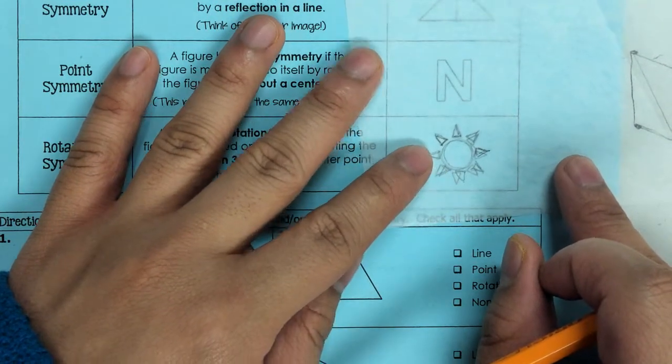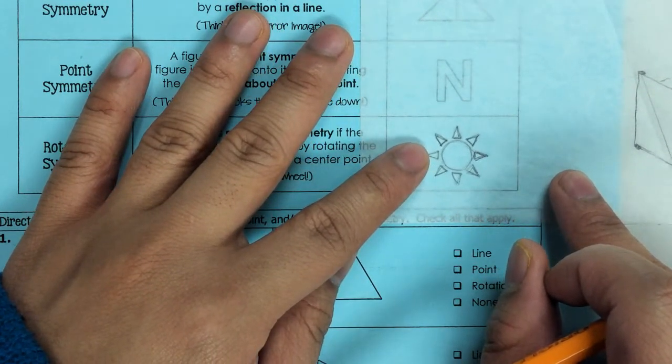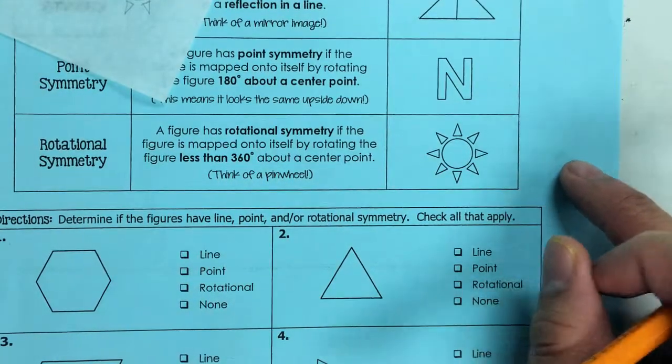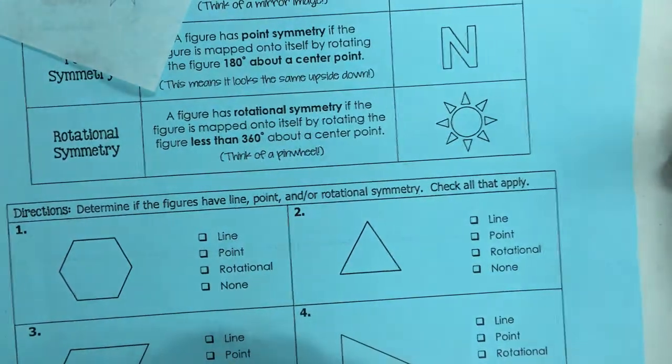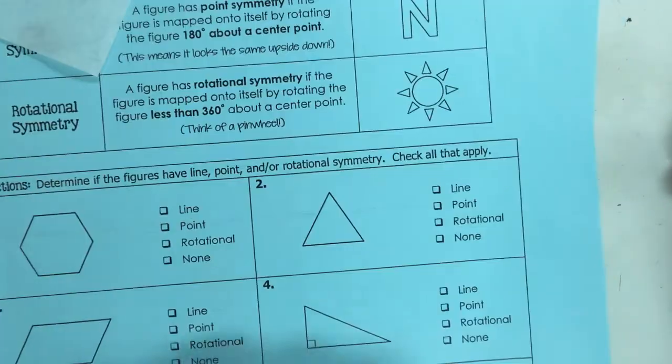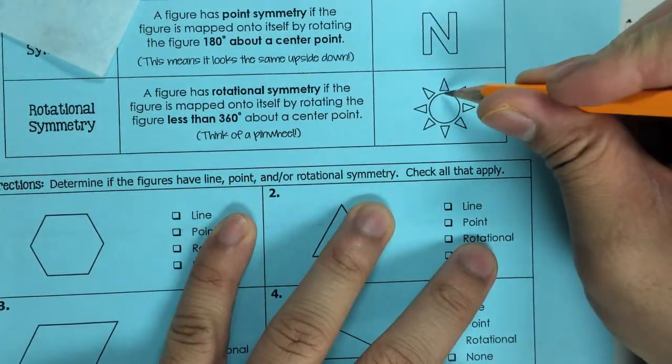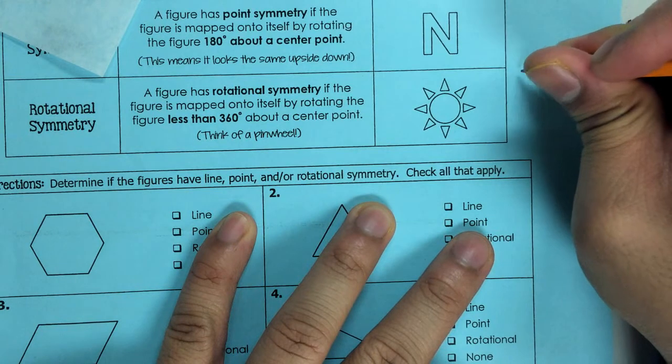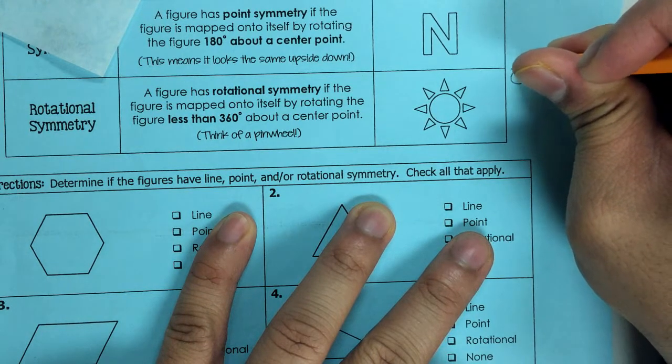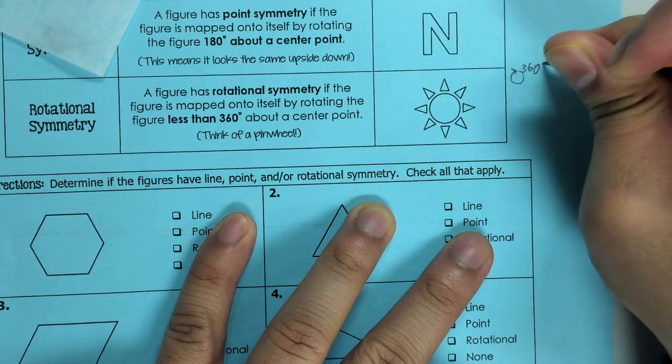Now for rotational symmetry we can figure out how many degrees we rotate. A full circle going all the way around is 360 degrees, so what we can do is take 360 degrees and divide by how many even parts we have.